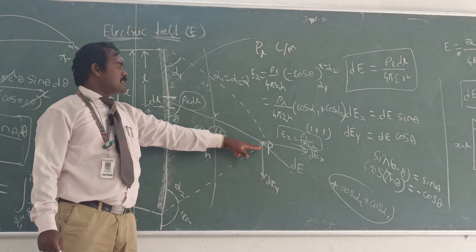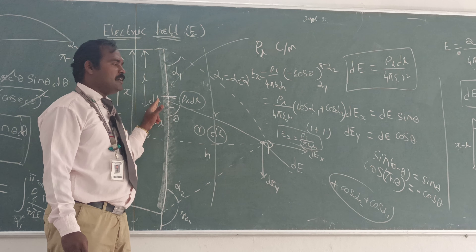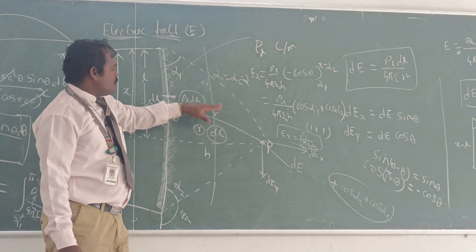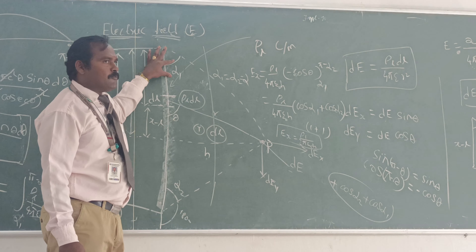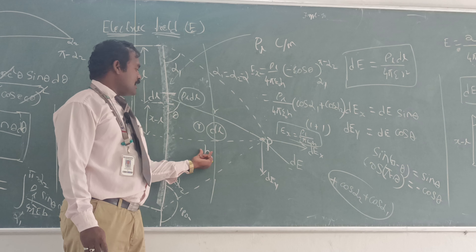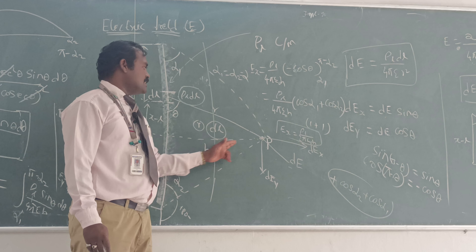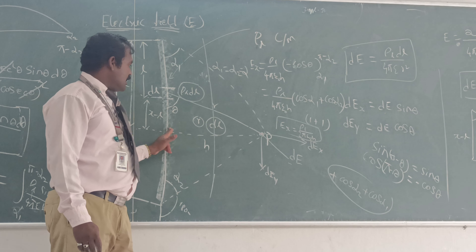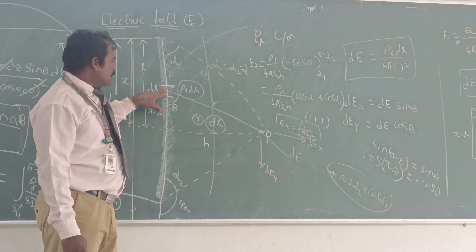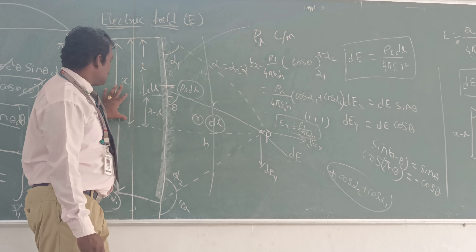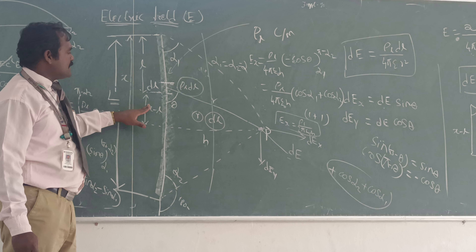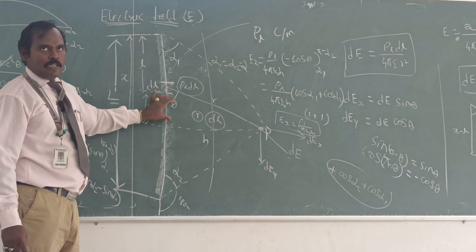Let us consider a point P, which has a distance R from the considered element dL. The same considered point has angle alpha 1 from one end and alpha 2 from the other end. H is the perpendicular distance from the considered point to the line. The remaining unknown distance from dL to H can be expressed as X minus L.